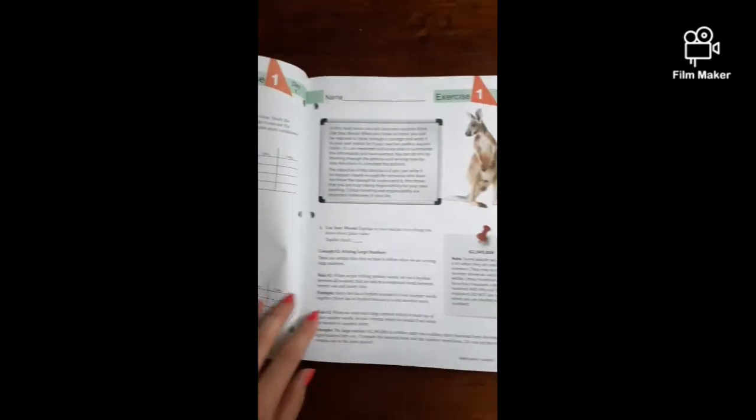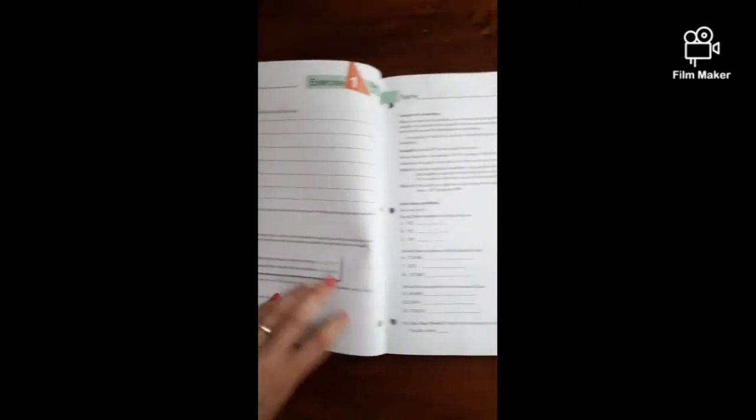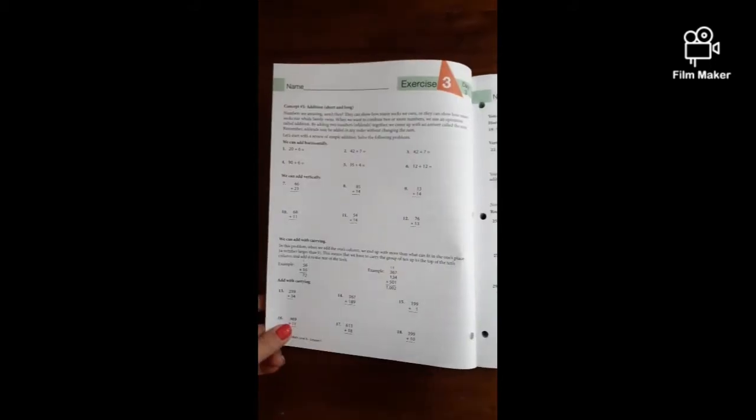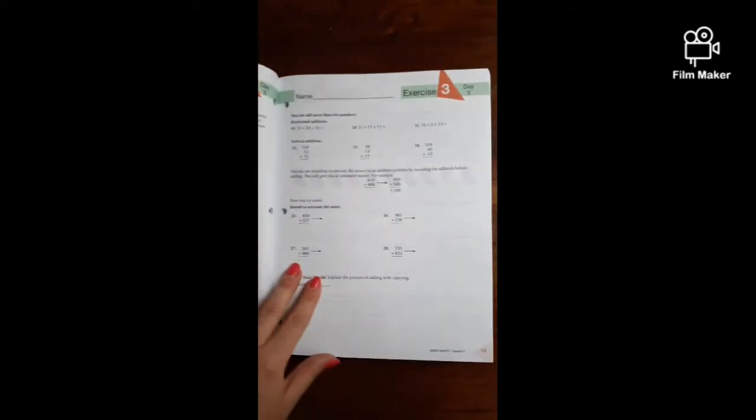We've got the scope and sequence and the list of items for the projects in the beginning of the book. Feel free to pause this video at any point to get a better look at what's offered.